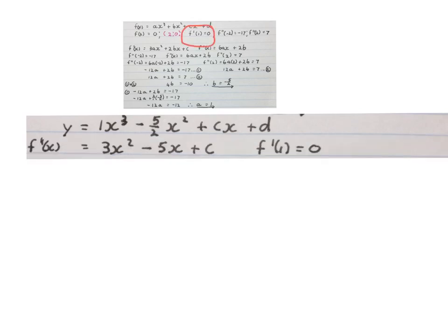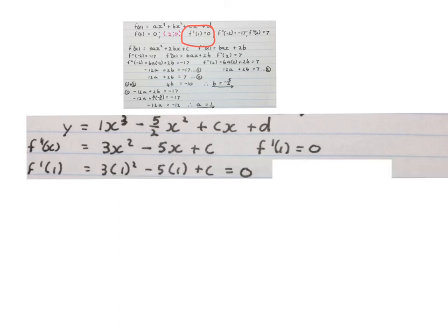At this stage the equation has a and b determined. Then, since f'(1) = 0, we work out the first derivative of this formula, replace x with 1, and equate it to 0. Simplifying gives c = 2.